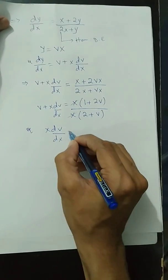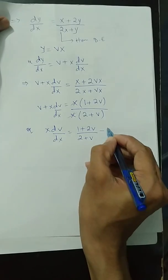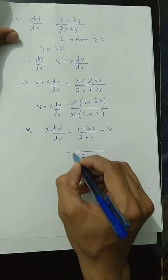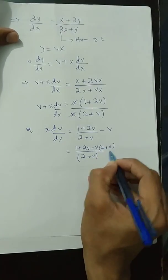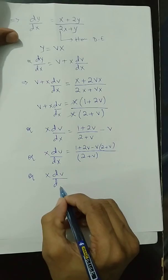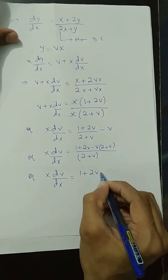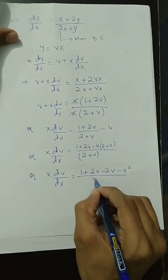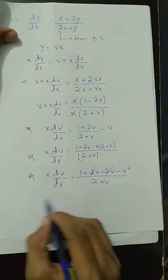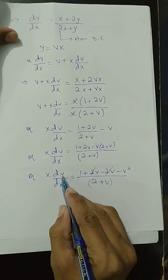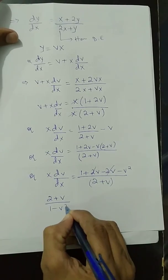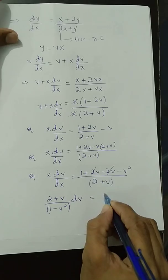This simplifies to X dv/dX = (1 + 2v)/(2 + v) − v = (1 + 2v − v(2 + v)) / (2 + v) = (1 + 2v − 2v − v²) / (2 + v) = (1 − v²) / (2 + v). Separating variables gives (2 + v) / (1 − v²) dv = (1/X) dX. This is now in variable separable form.